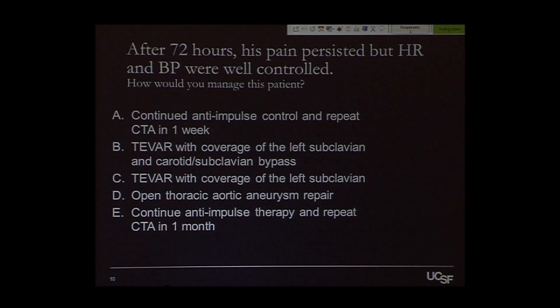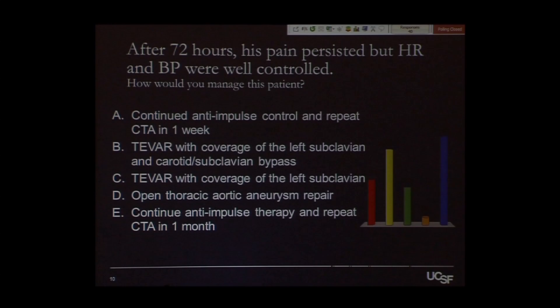Options are: continue anti-impulse therapy with CT angiogram, TEVAR with coverage of the left subclavian with carotid subclavian bypass, open thoracic aortic aneurysm repair, or continue anti-impulse therapy and repeat CTA in one month. Results show 35% would continue anti-impulse therapy and repeat CT angiogram in one month, with the second choice being TEVAR with coverage of the left subclavian and carotid subclavian bypass. Both were offered to this patient, but he was scared and opted for the repeat CT angiogram in one month.